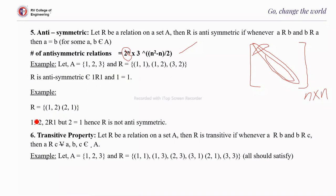One more example: let R = {(1,2), (2,1)}. Here (1,2) is present and (2,1) is present, but 1 is not equal to 2. Therefore R is not an anti-symmetric relation.